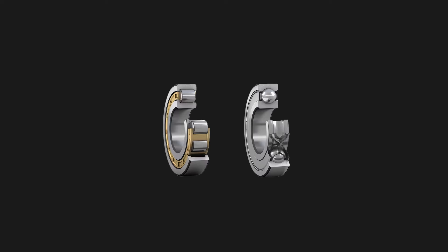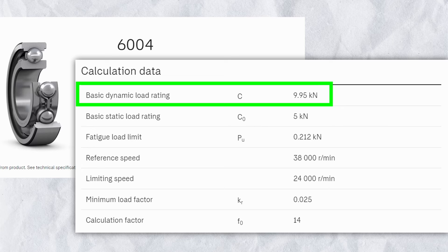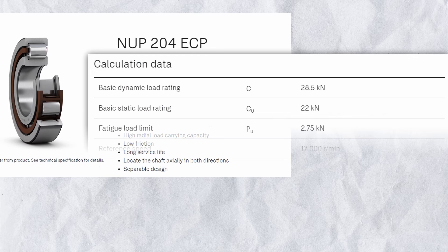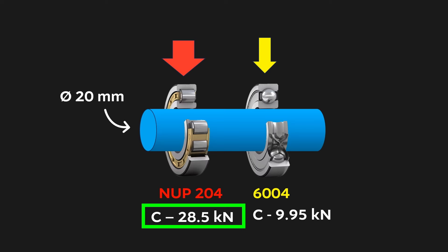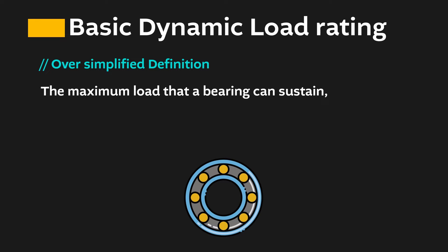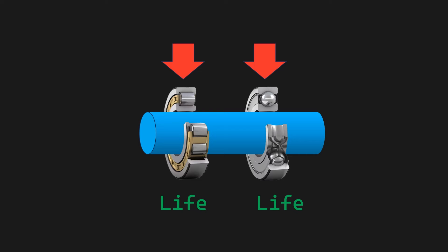So there are some key points to keep in mind. First, roller bearings accommodate heavier load than the same sized ball bearing. For example, for a shaft size of 20 mm, deep groove ball bearing 6004 has a basic dynamic load rating of 9.95 kN. For the same shaft size 20 mm, cylindrical roller bearing NUP204 has a basic dynamic load rating of 28.5 kN — much more than the ball bearing. If we oversimplify the basic dynamic load rating, it is the maximum load a bearing can sustain for 1 million revolutions before any sign of failure. So under the same load, a roller bearing can give more life as compared to a ball bearing.